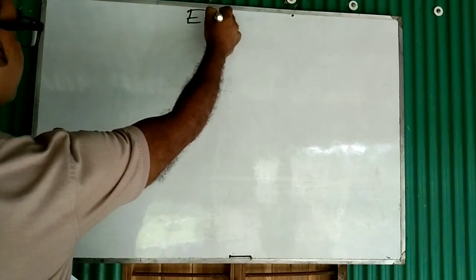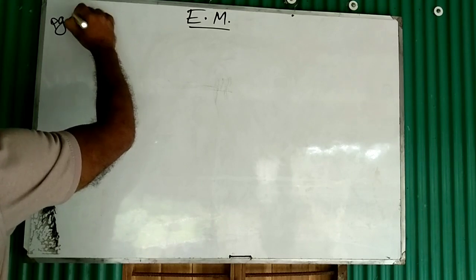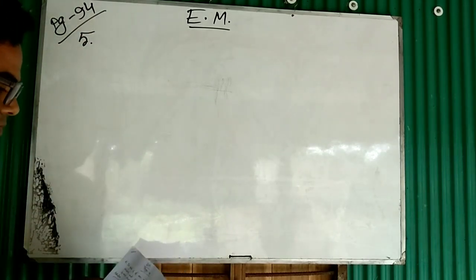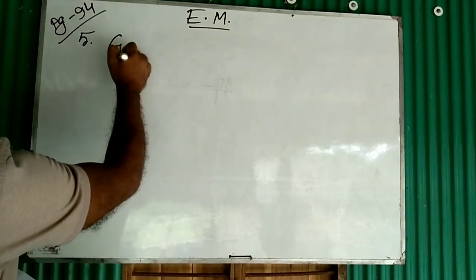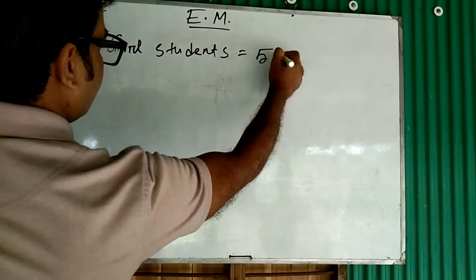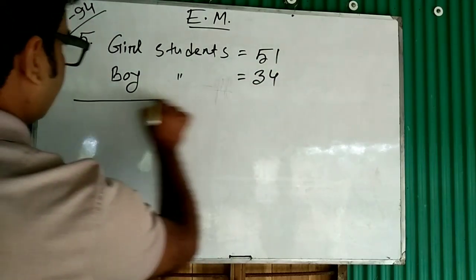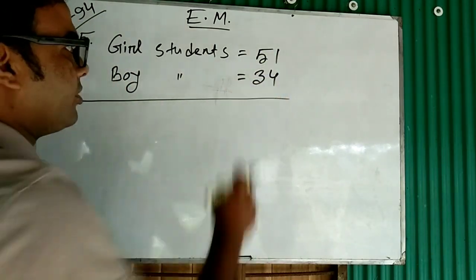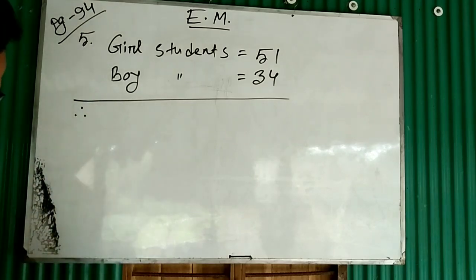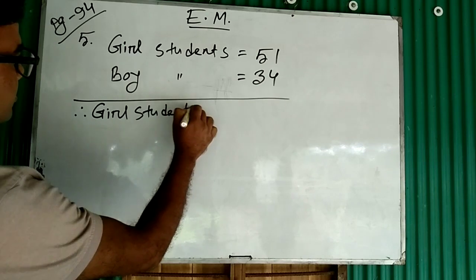Elementary math book, page 94, question number five. The given information: there are 51 girl students and 34 boy students. Girls student is more than the boys students. Therefore girls student is more than boys students.